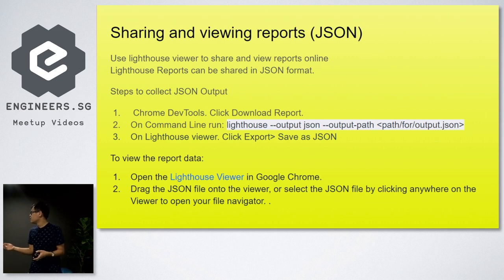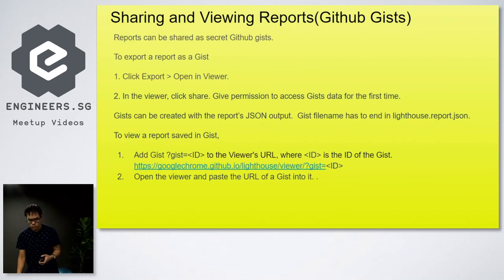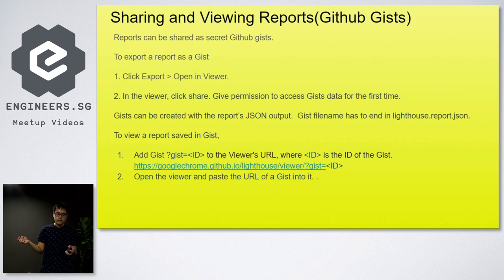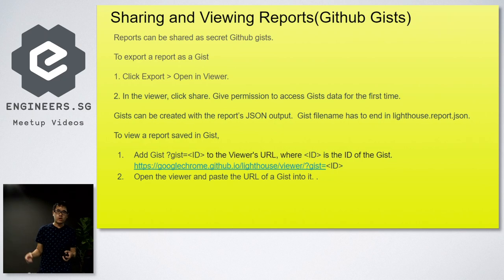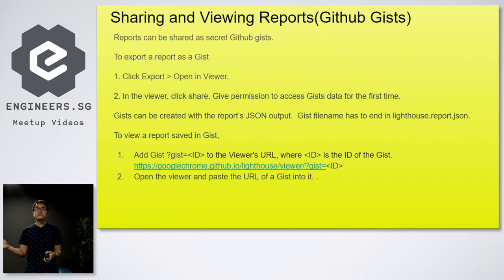To view the report data, we go to the Lighthouse viewer on Google Chrome, then attach the JSON file onto the viewer, or click on the viewer to insert the JSON file. We can also share and view reports using GitHub Gists — specifically secret Gists. To do that, we export the report as a Gist and open the Gist in the viewer. In the viewer, we click Share. If doing it for the first time, we have to give permission to access the Gist data. The Gist filename must end in lighthouse.report.json. To view a report saved in a Gist, we add the Gist ID to the viewer's URL where ID is the ID of the Gist, then open the viewer and paste the Gist URL into it.